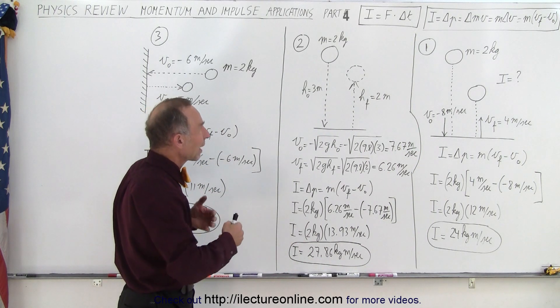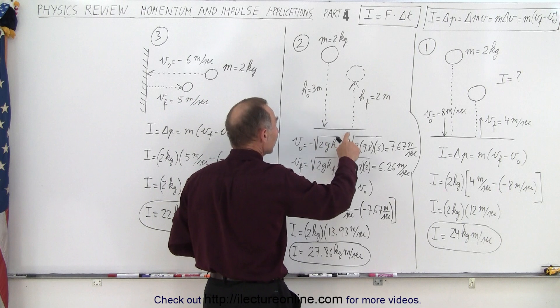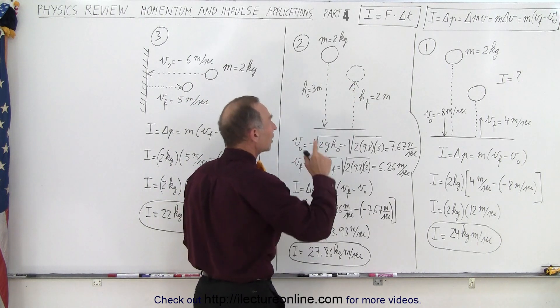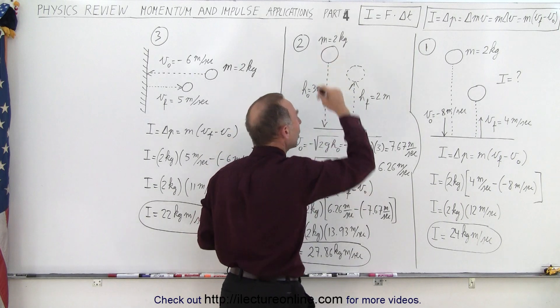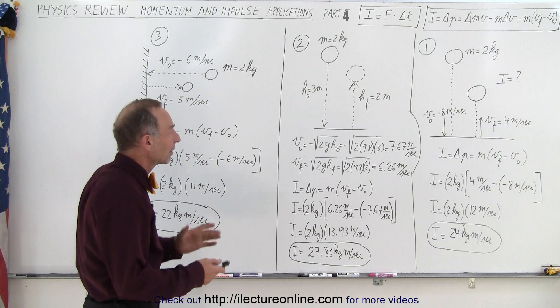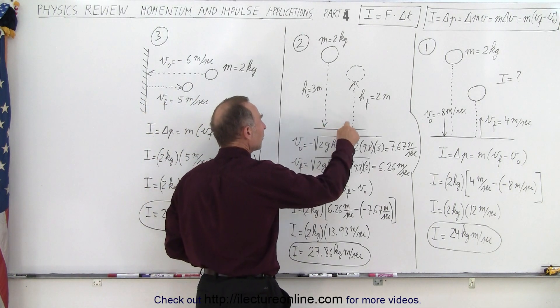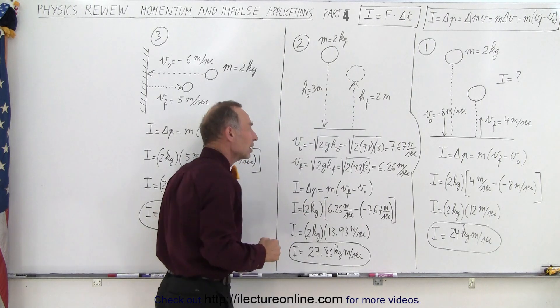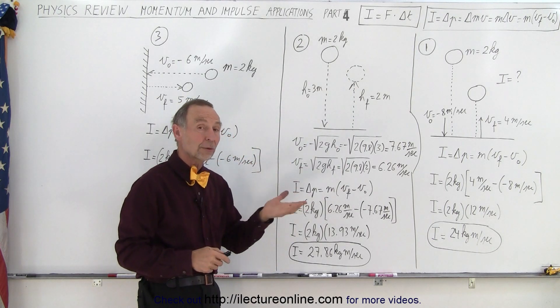A second example could be where we have a similar situation, but instead of giving us the velocity of impact and the velocity that returns back into the air, maybe they tell us from what height that was dropped and how high the ball will go after the collision with the earth. So there we can say that let's find the velocity of impact and the velocity at which it leaves the ground by using this equation where the velocity is equal to the square root of 2gh.